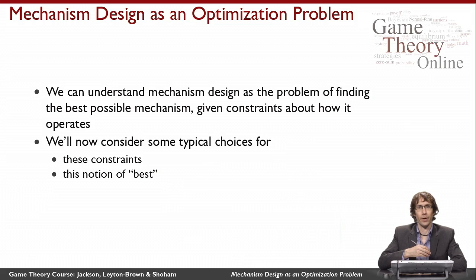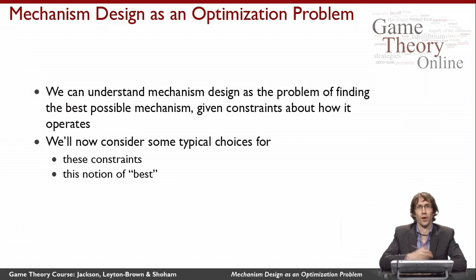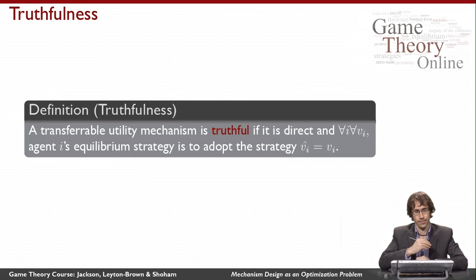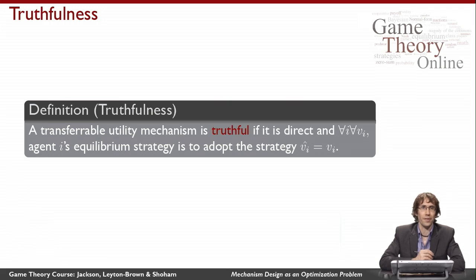In this lecture, I'm going to tell you about some of the common constraints that we impose on mechanism design and some of the different notions of best that we try to optimize under these constraints. Let me begin with something we've already spoken about a bit — truthfulness — but now I'll define it in the context of transferable utility mechanisms.